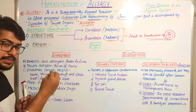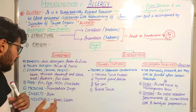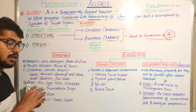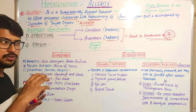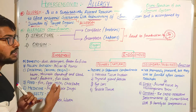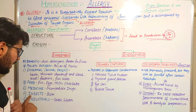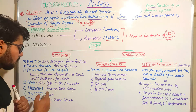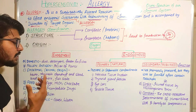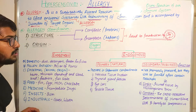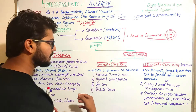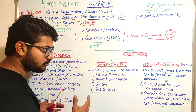Food allergens include fish, eggs, milk, chocolate, and others. Medicines — drugs that are not compatible for some people — can cause different reactions in our body, otherwise known as allergic or hypersensitivity reactions. Insects and insect bites may cause allergic reactions. Industrial allergens include gases, fumes, and waste products from industries that may cause exogenous allergic conditions.